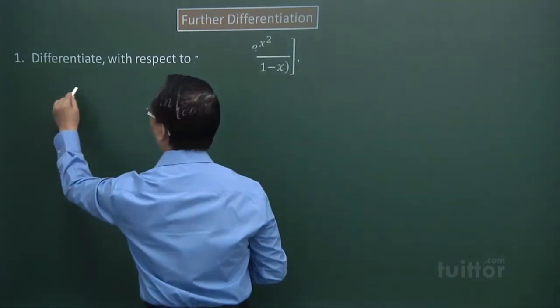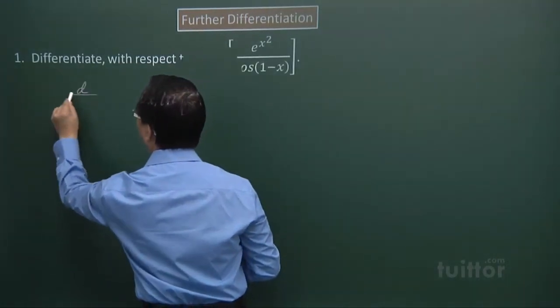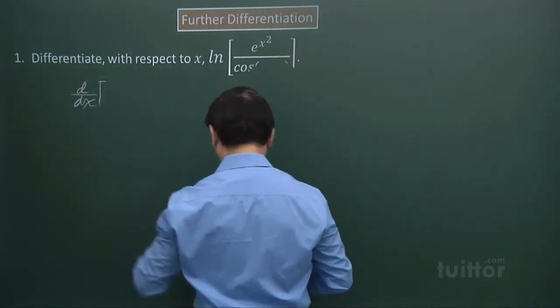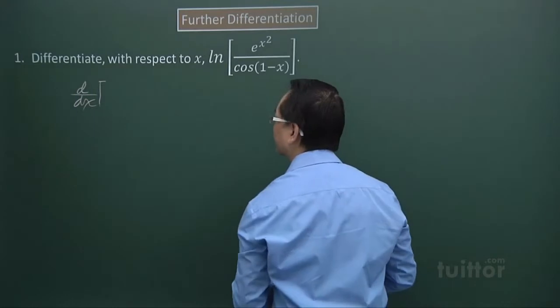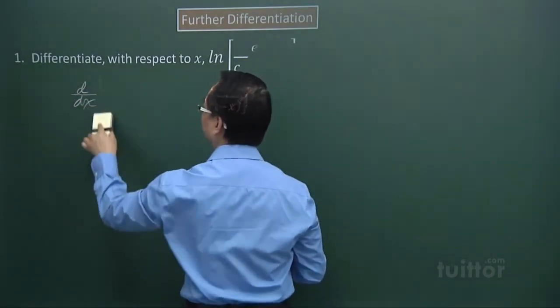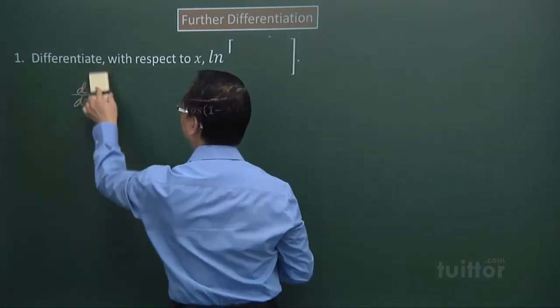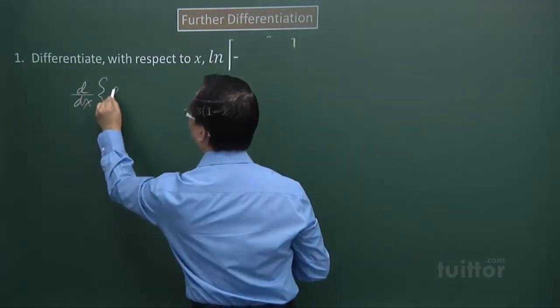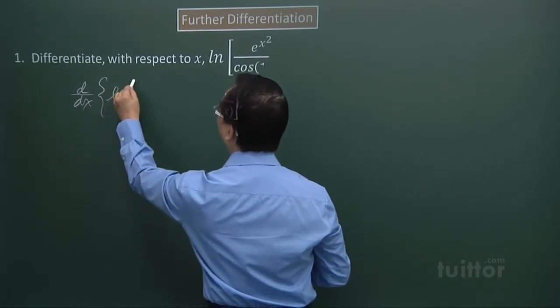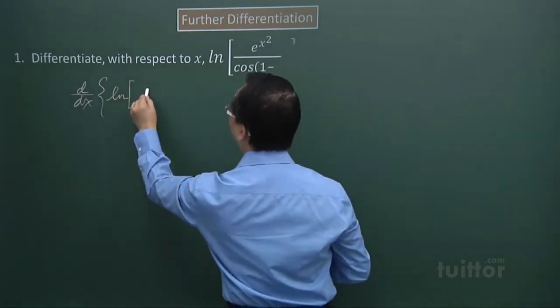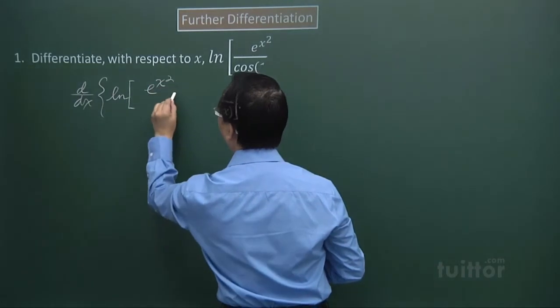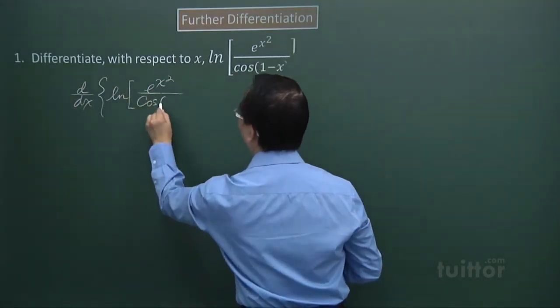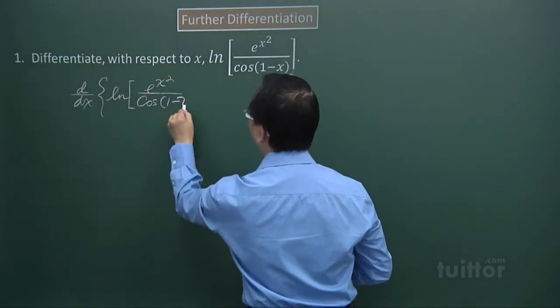So we begin with rewriting the question. ln square bracket e to the power of x squared over cos bracket 1 minus x.